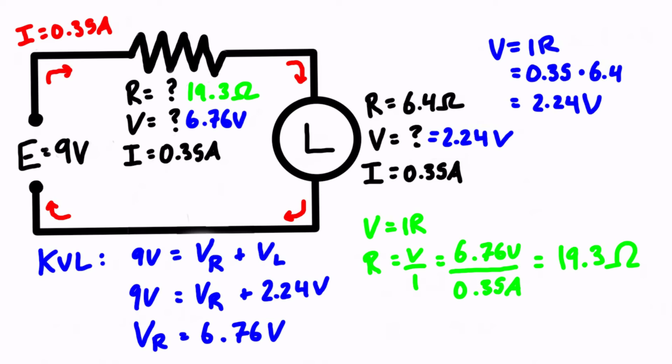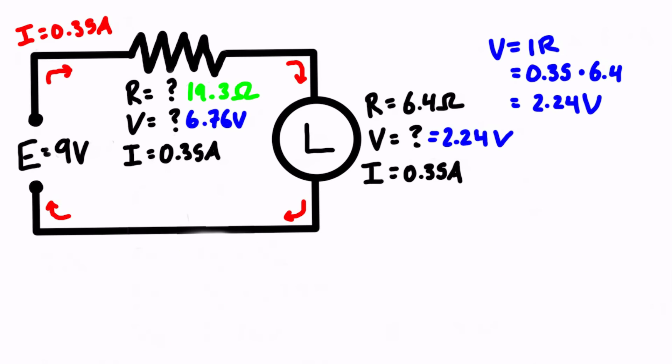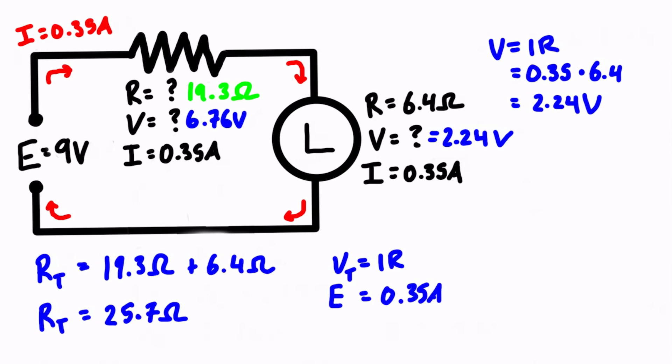Now if you're satisfied with that you can stop there. But if you're not sure that you got the right answer, then we can quickly check using a different formula. There's usually more than one way to check things in circuits. So let's double check - first our total resistance is going to equal the sum of all the resistances. So it'll be equal to 19.3 ohms plus 6.4 ohms. So the total resistance of the circuit is 25.7 ohms. And then we can check Ohm's law one last time using this for the overall circuit. So E is going to be equal to the current times the resistance. So we have 0.35 amps times 25.7 ohms, and we're going to see that that is equal to 9 volts.